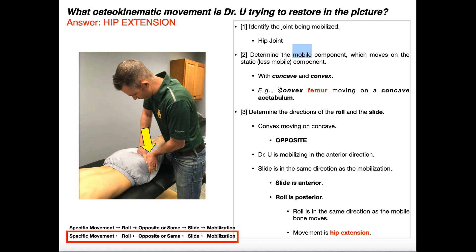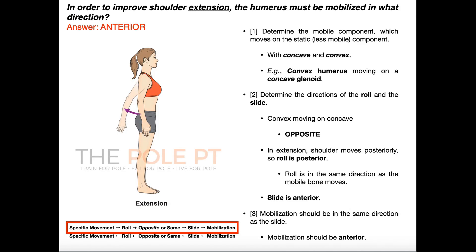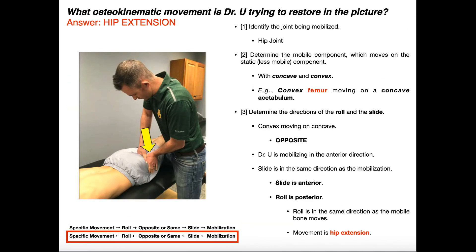We always want to form a sentence: mobile bone moving on a static bone. In this case, it's a convex femur moving on a concave acetabulum. We wouldn't say a concave acetabulum moving on a convex femur because that would imply something static moving on something mobile — if it's static, it can't move. It has to be something mobile moving on something static. So we've got a convex femur moving on a concave acetabulum.